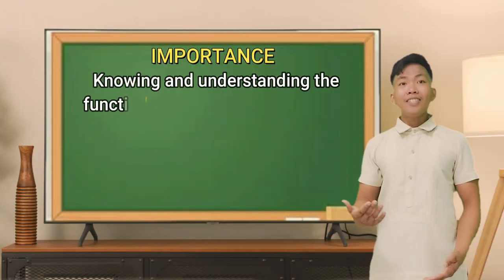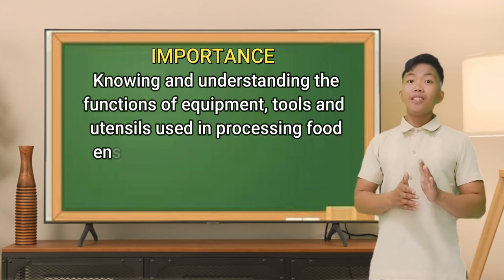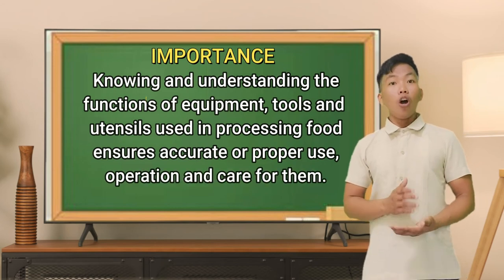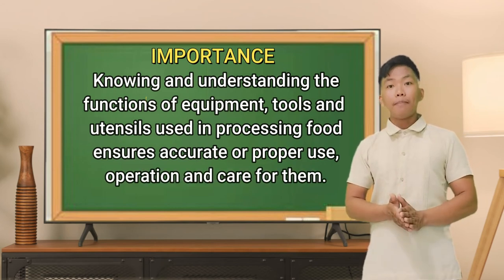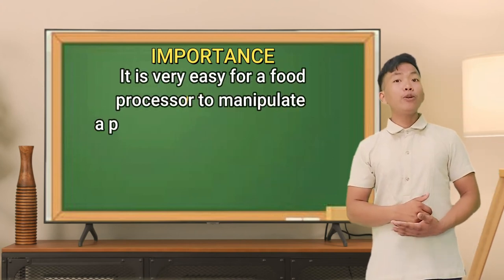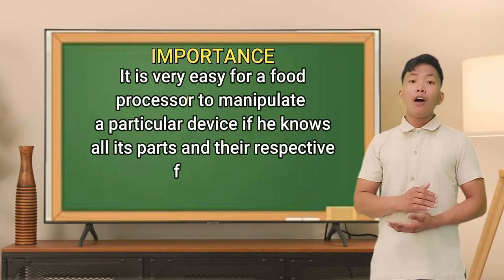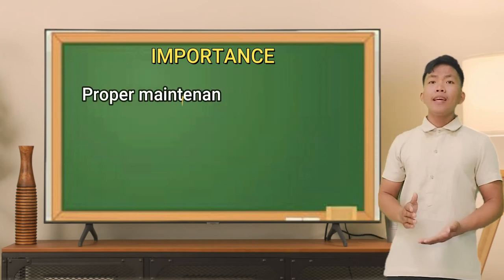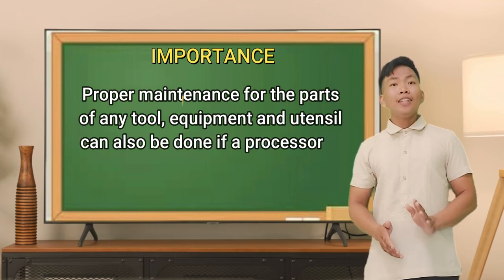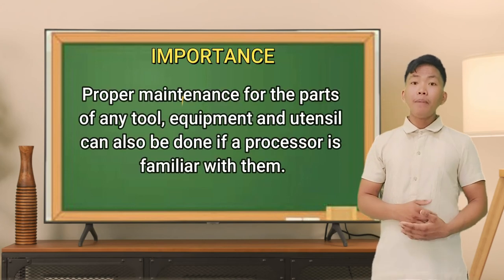Knowing and understanding the functional equipment, tools, and utensils used in processing food ensures accurate and proper use, operation, and care for them. It is easy for a food processor to manipulate a particular device if he knows all its parts and their respective functions. Proper maintenance of any tool, equipment, and utensil can also be done by a processor if he or she is familiar with them.